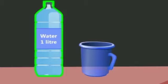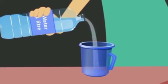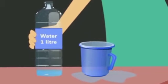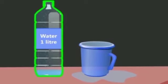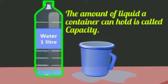Let us learn about capacity. Here you can see a bottle filled with water and an empty jar. Let us pour this water into the jar. The water started overflowing and fell out of the jar. Hence, we can say that the capacity of the bottle is more than the jar — the bottle can hold more water than the jar. The amount of liquid a container can hold is called its capacity.